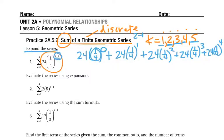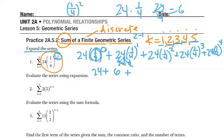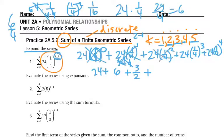So 1 fourth to the 0 is 1, so we'd have 24 plus 1 fourth to the 1st is 1 fourth. 24 times 1 fourth, that's like 6 times 4, so the 4s cancel. 24 times 1 fourth, that'd be like 24 divided by 4, which is 6. Plus 1 fourth squared. When you square a fraction, square the top, 1 squared would be 1. Square the bottom, 4 squared would be 16. So we'd have 24 times 1 over 16.